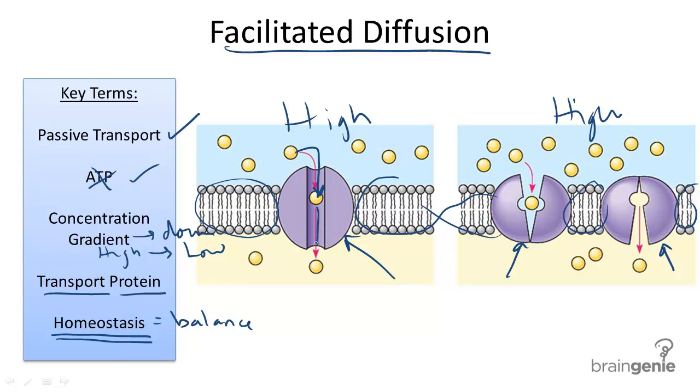One example that is a popular method of facilitated diffusion is the movement of glucose into cells. Put inside the cell and this is outside the cell.